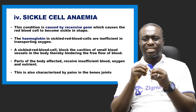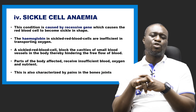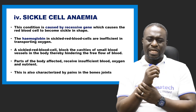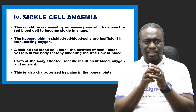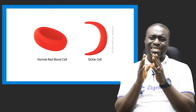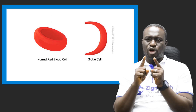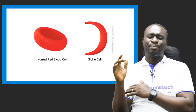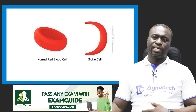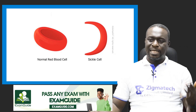Parts of the body affected receive insufficient blood, oxygen, and nutrients. Sickle cell anemia is also characterized by pains in the bones and joints. You can see on the screen the structure of a normal red blood cell and also the structure of a sickled red blood cell. That is what causes, or what we know as, the sickle cell anemia disease.